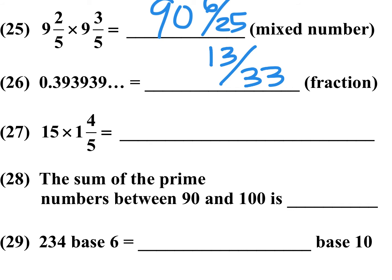Number 27, 15 times 1 and 4 fifths. You can change 1 and 4 fifths to 9 over 5, and then you take 5 and 15, that's 3. 3 times 9 is 27.